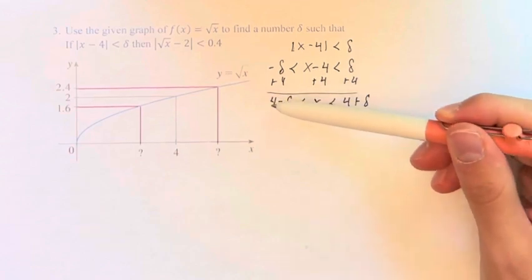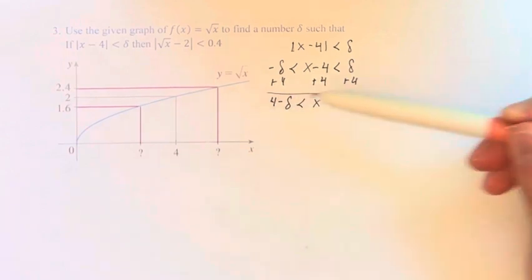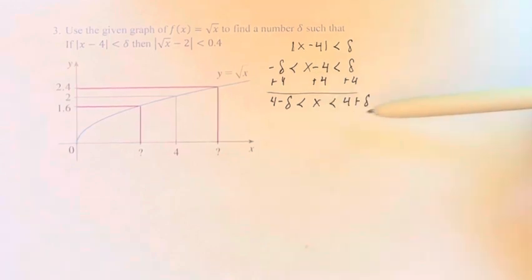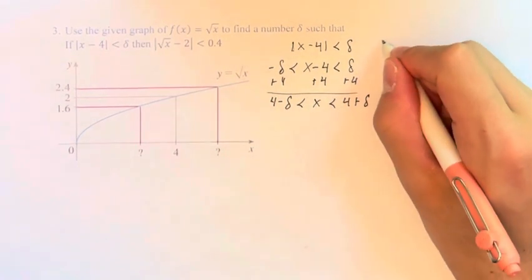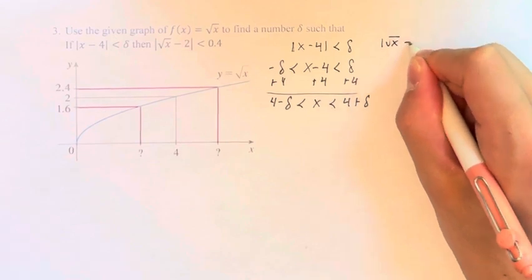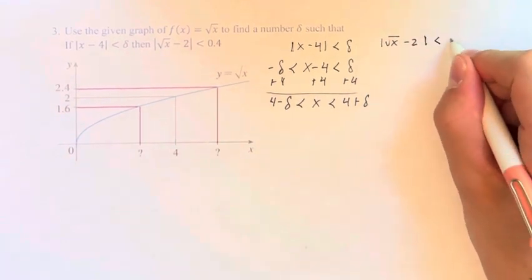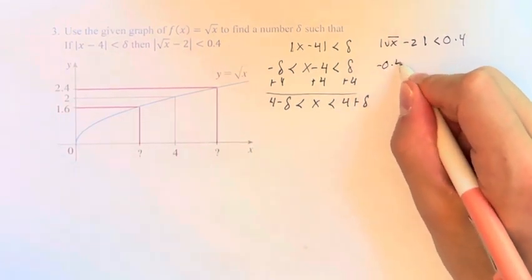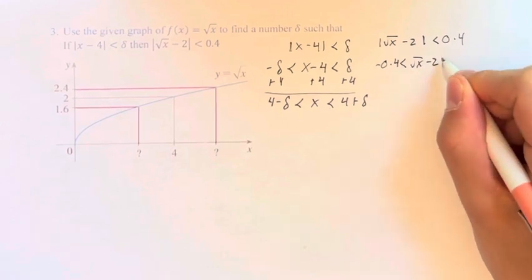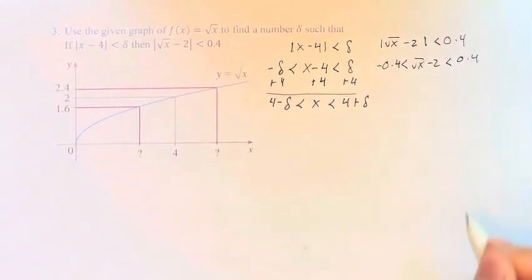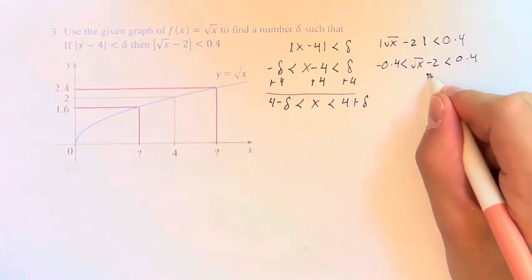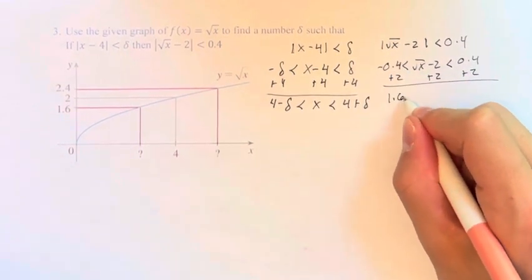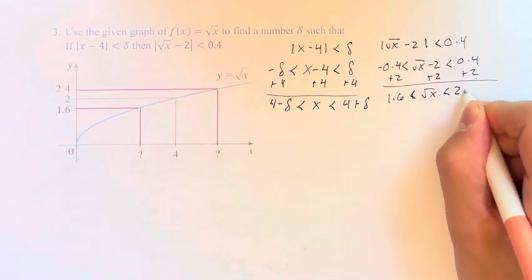You can go all the way down to delta away from 4 in one direction, or all the way down in the other direction, but we have to stay within that range. And this is going to correspond with the absolute value of the square root of x minus 2 being 0.4, which means that this is greater than negative 0.4 and less than 0.4. And if we add 2 everywhere, we get that 1.6 is less than the square root of x is less than 2.4.